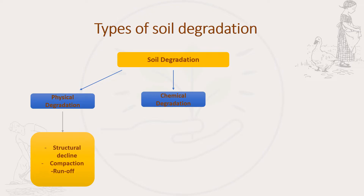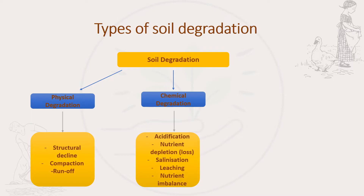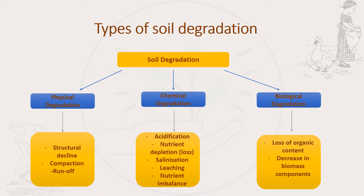The second type is chemical degradation. Farmers use a range of chemicals to kill weeds and pests in the soil. If these pesticides and herbicides are not applied correctly, the soil may be harmed. This will lead to acidification, salinization, leaching, nutrient imbalance, and the loss of nutrients in the soil. The third type is biological degradation, which can lead to the loss of organic content in the soil.